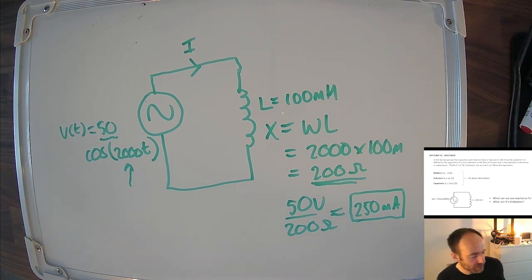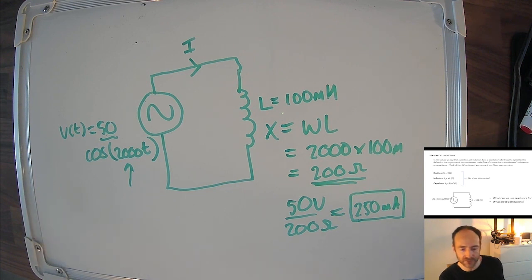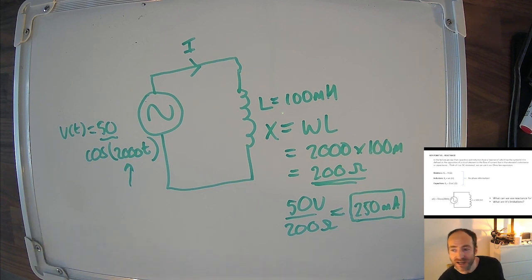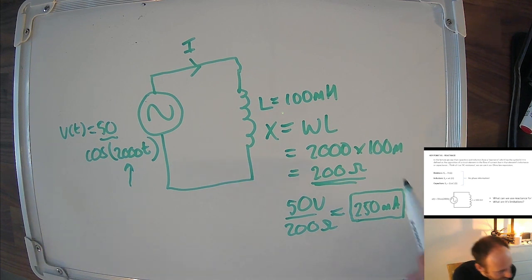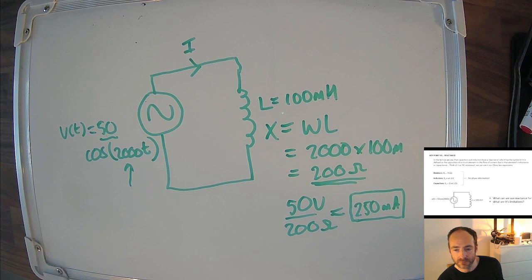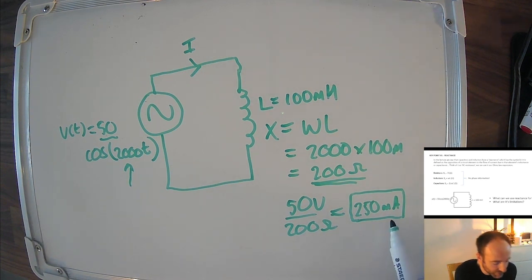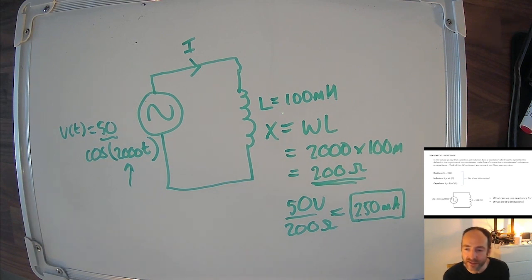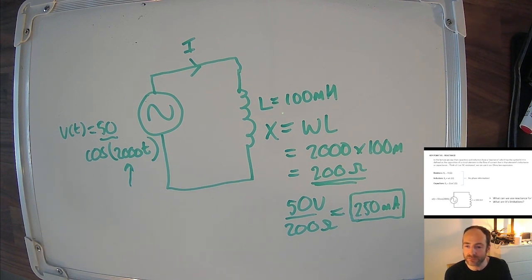This is useful — if you buy an inductor you need to know what current it can handle. Every inductor at a component supplier will have an inductance and a current handling capability, maybe 100 milliamps or 10 amps. So you can use reactance to calculate that peak current. But the limitation is that we don't see anything to do with phase. This 250 milliamps does not occur at the same time as our 50 volts — there's a phase difference that reactance completely misses.